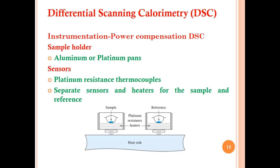The other type of DSC is power compensated DSC. This is a simpler instrument compared to heat flux DSC. The sample holder uses aluminum or platinum pans — two pans, one for the sample and one for the reference. Platinum-resistant thermocouples are used as sensors; separate sensors are needed for both the sample and the reference.